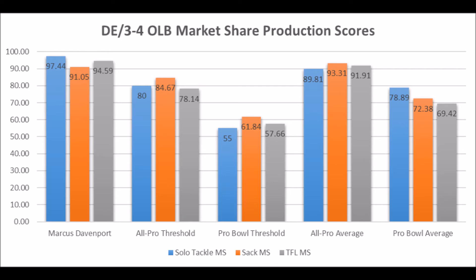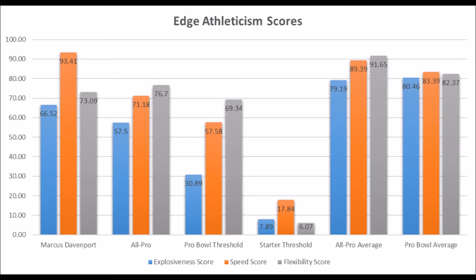Moving to his athleticism data, he had a 66.52 explosive/body strength score, 93.41 speed score, and 93.09 flexibility score. Based on the data since the 1999 NFL draft class, he fits the profile more of a pro bowl player than an all-pro player — largely because of his flexibility testing. However, he's very close to the bottom-end threshold for a multiple all-pro edge rusher, meaning every multiple all-pro edge rusher had at least that score or higher.